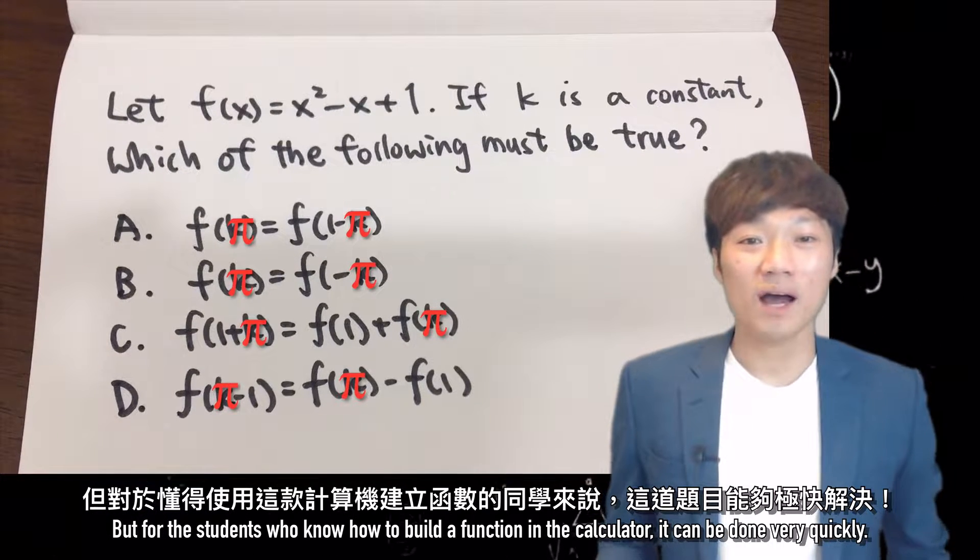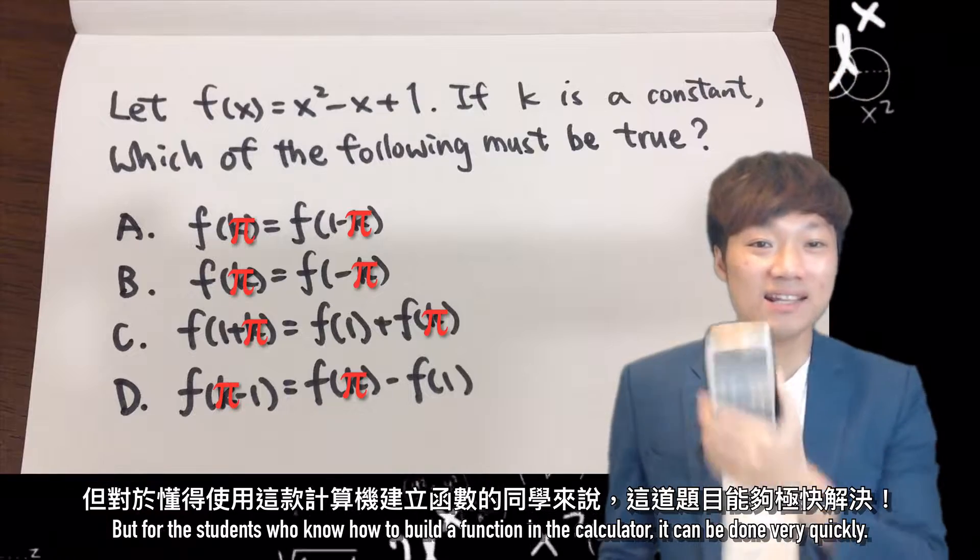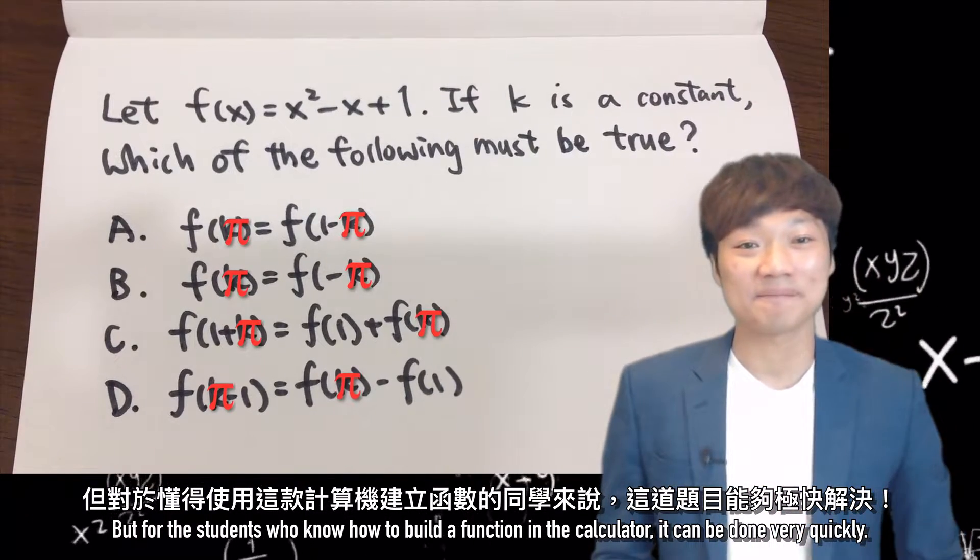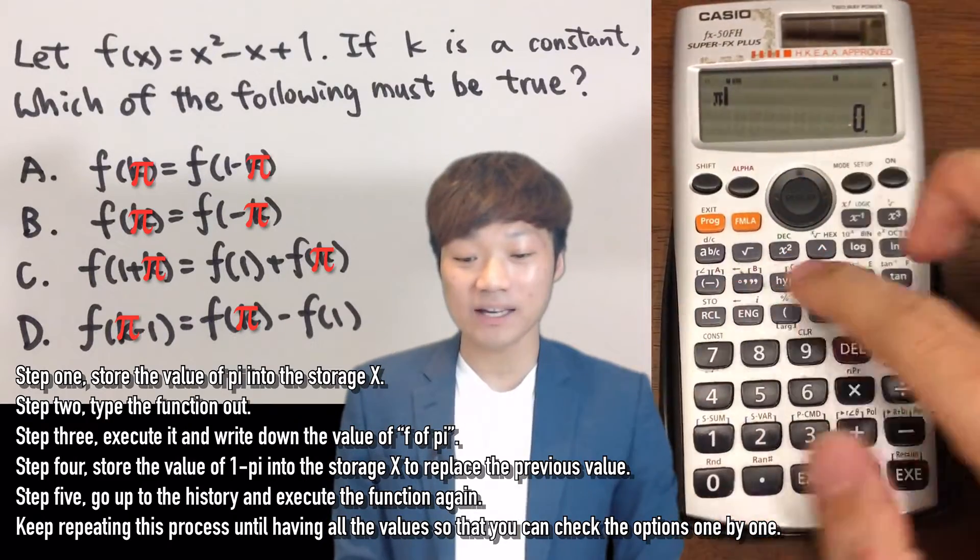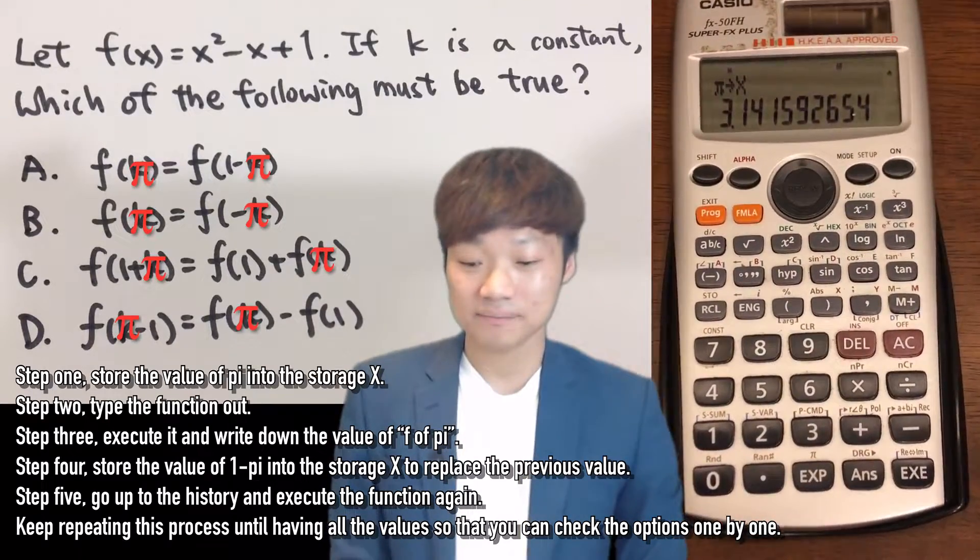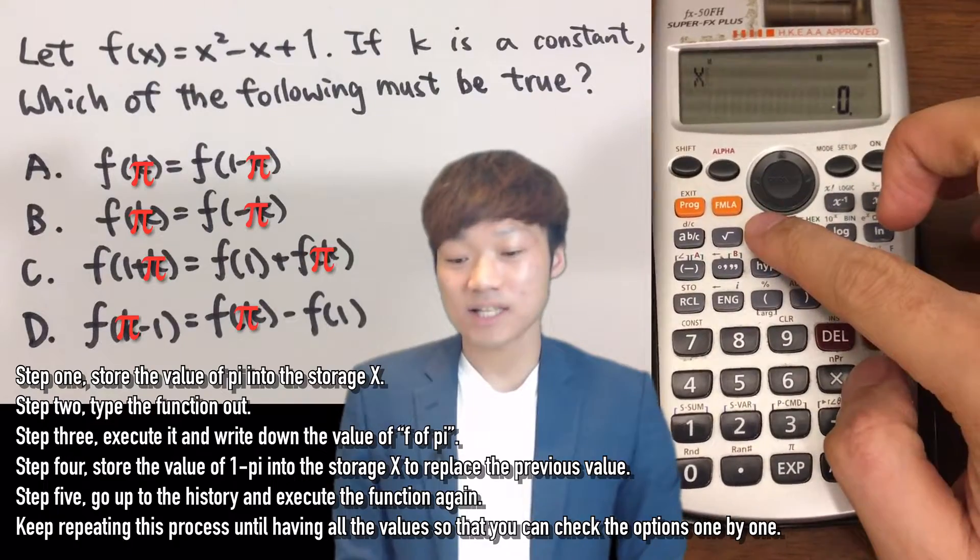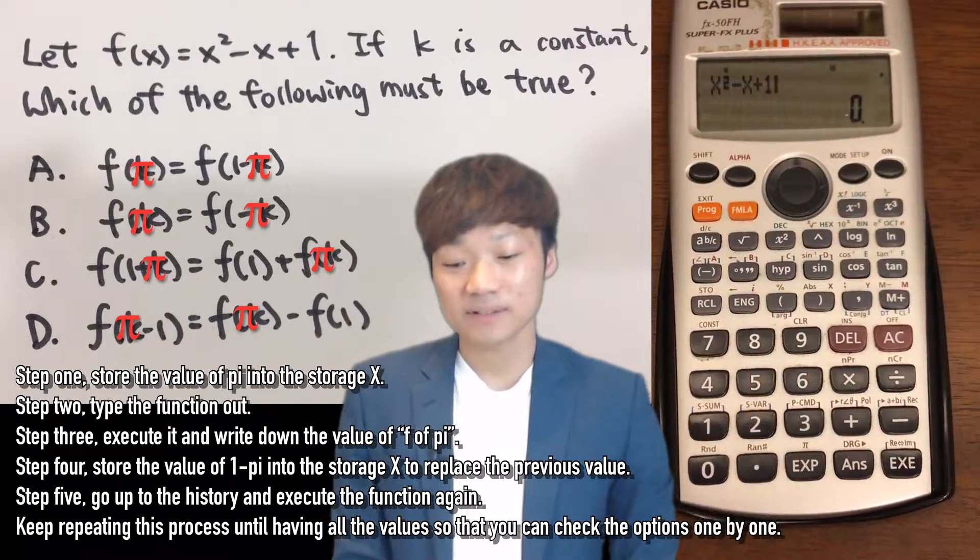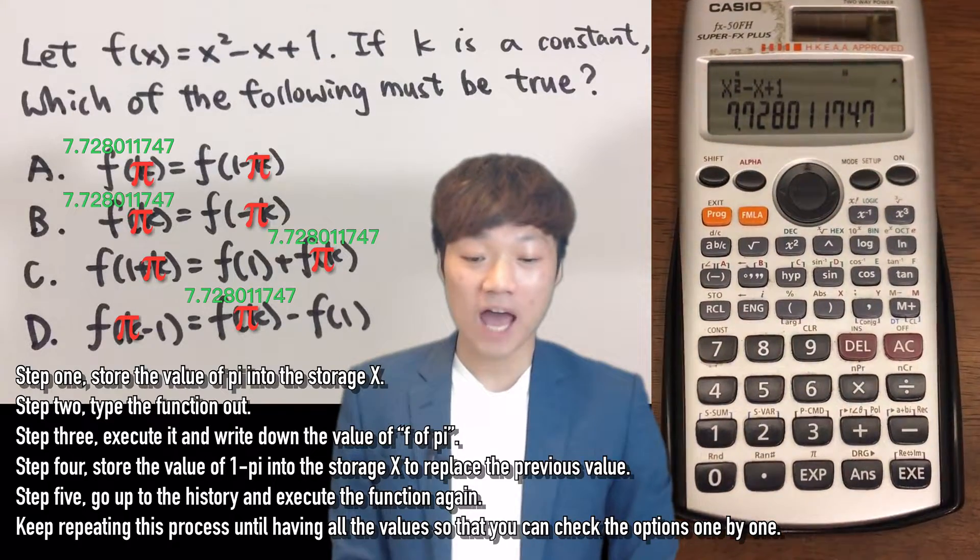But for the students who know how to build a function in this calculator, it can be done very quickly. Step 1: Store the value of pi into the storage x. Step 2: Type the function out. Step 3: Execute it and write down the value of f of pi.